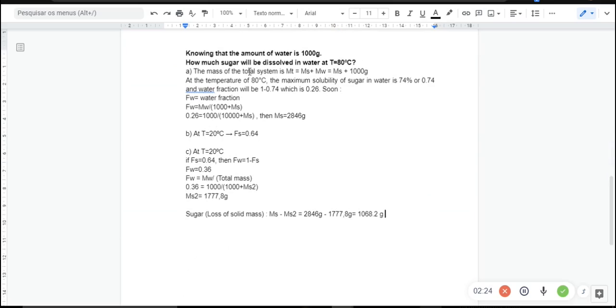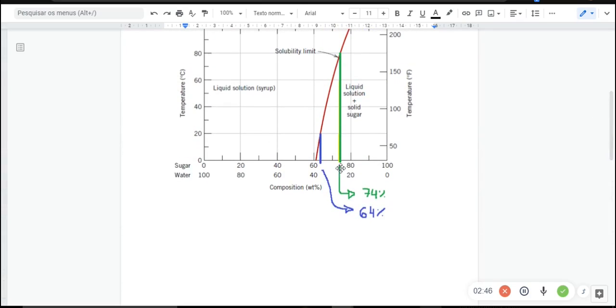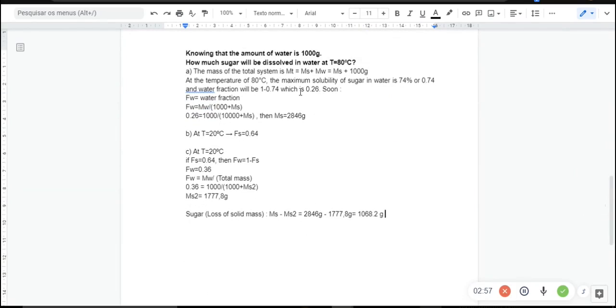We have the mass of the total system is mass of the sugar plus mass of the water. Mass of the sugar we do not know, but the mass of the water is 1000 grams. We have just found here that the composition of the sugar, which is the fraction of sugar in the system, is 74%. So the fraction of water is 1.0 minus 0.74, which is 0.26.